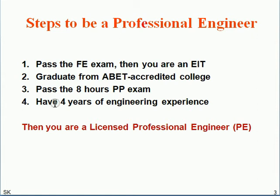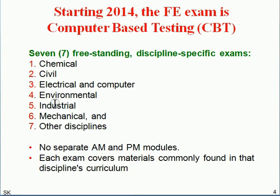One or more professional engineers must certify that you worked under them. Then you apply to the licensing board and become a PE. Starting in 2014, the FE exam is called CBT — computer-based testing. It is no longer handwritten. There are seven disciplines; take the exam in your own discipline, such as civil or electrical. If you don't fit one of the six specific disciplines, take the Other Disciplines exam.